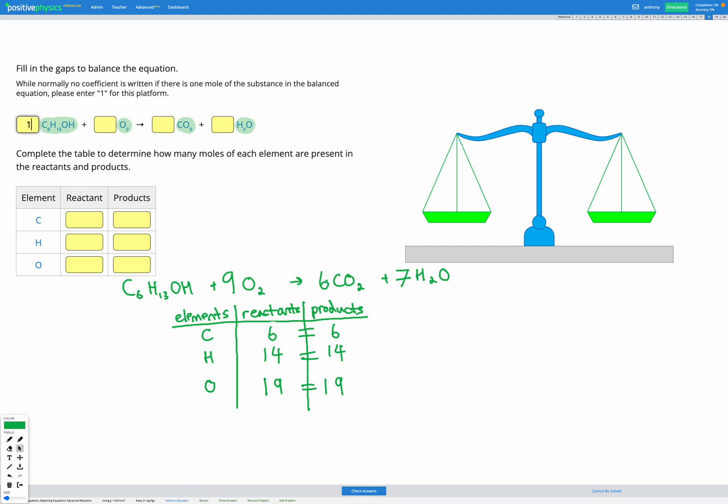We had 1 set of that hydrocarbon, 9 sets of oxygen, 6 sets of carbon dioxide, and 7 sets of H2O. We can just check our answers in our table here. We had 6 carbons before and 6 after, 14 hydrogens before and 14 after, 19 oxygens before and 19 after.